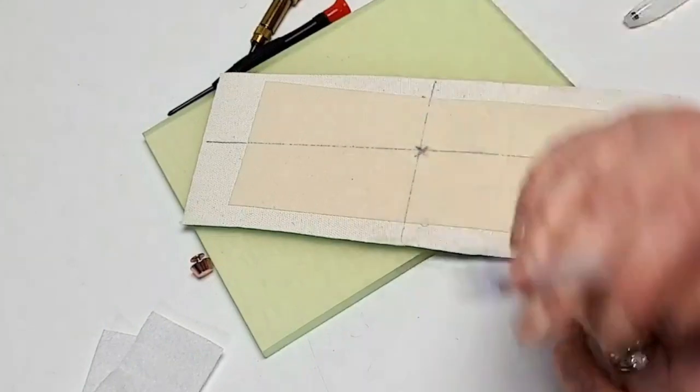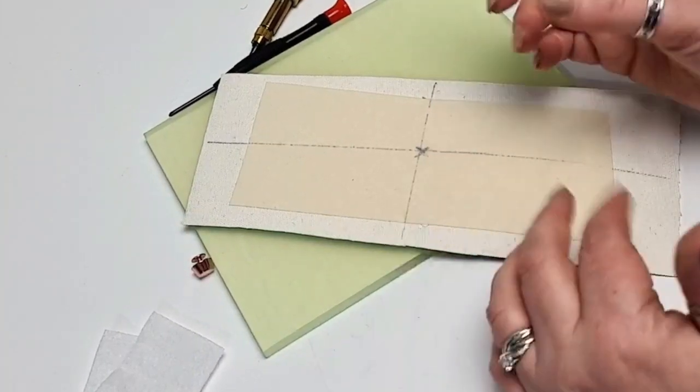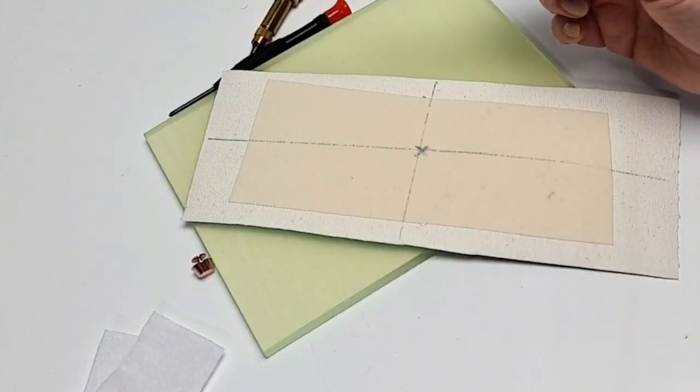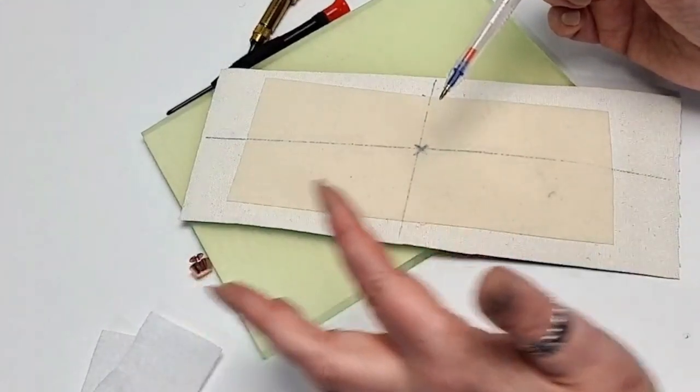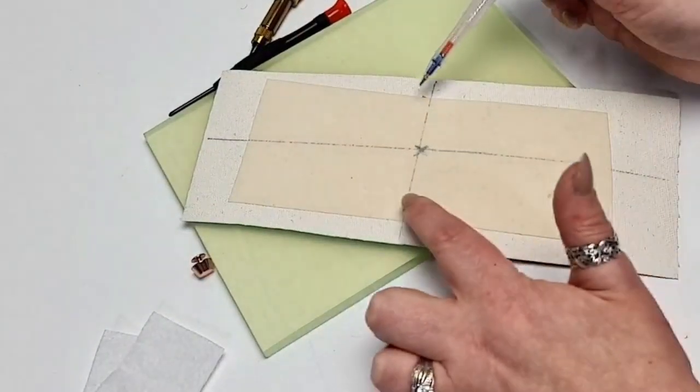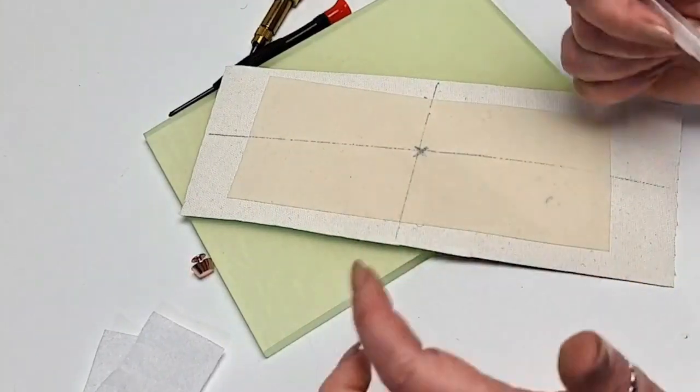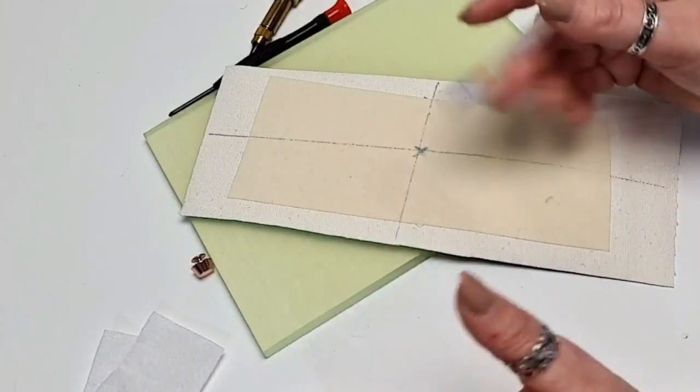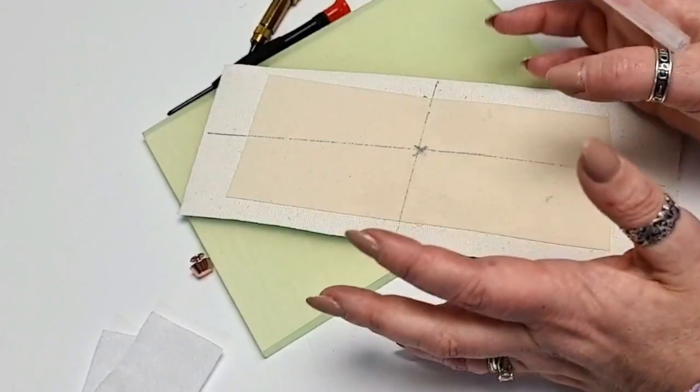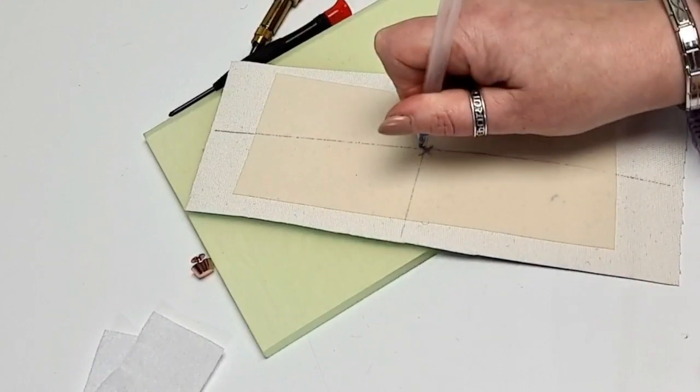If I was making a smaller bag and I only wanted four bag feet, I would mark them out from the edges. If I was doing a bigger bag and I wanted six feet, I would mark four out from the corners and then mark two out along this line and place six in total. As a rule of thumb, I usually tend to place five feet in my bags unless it's a really quite small bag, and then I'll just use four.